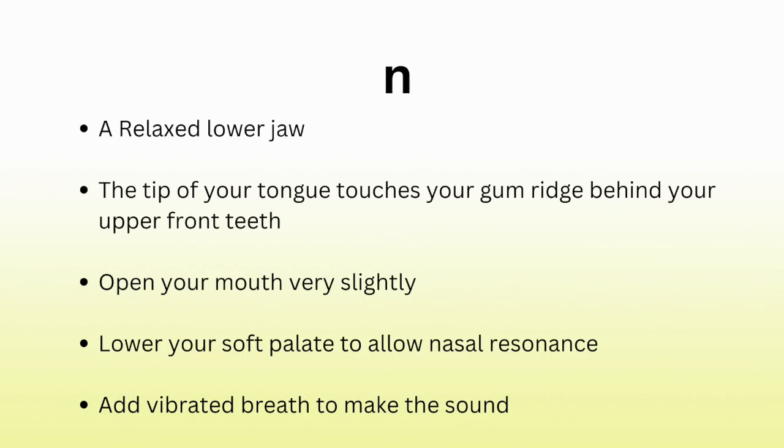But for now, we are going to move on to the next nasal continuant, n. The mechanical placement for the correct pronunciation of n is a relaxed lower jaw. The tip of your tongue touches your gum ridge behind your upper front teeth. You open your mouth very slightly. You lower your soft palate to allow the nasal resonance. And you add vibrated breath to make the sound. That's the proper placement for the consonant n. Now let's just try saying it a few times.